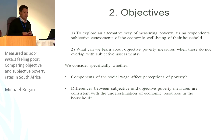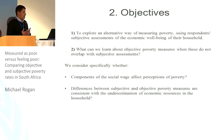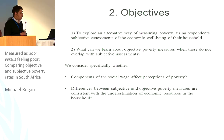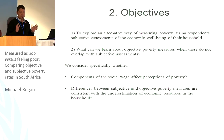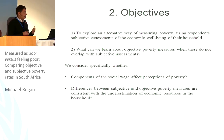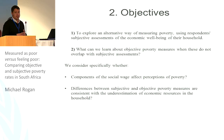The objectives of this study are to explore an alternative way of measuring poverty, where we use respondents' own perceptions of economic well-being in their household. We then want to see what we can learn about these objective poverty measures when they don't overlap with subjective assessments of poverty. Given the state of the debate in South Africa, we're interested in whether components of government expenditure broadly termed the social wage affect perceptions of poverty, and whether differences between subjective and objective poverty measures are consistent with underestimation of resources in households.